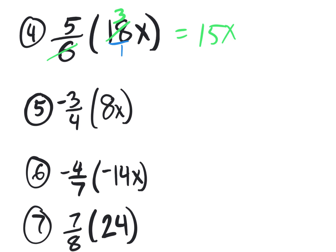Eight divided by four is two, and then two times negative three is negative six x. It might be a little too much to do in our heads right now, but as you do these over and over, you'll build the skill to see that it's divisible by four. We could multiply top with top, bottom with bottom, then reduce — or reduce first. I recommend reducing first: eight divided by four is two, then negative three times two x is negative six x.